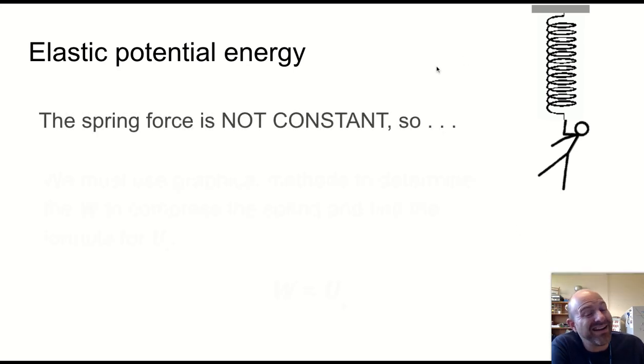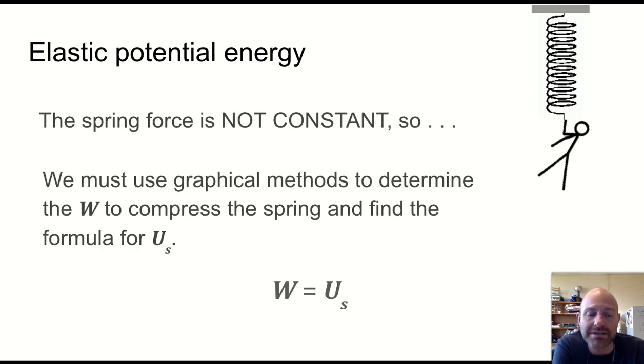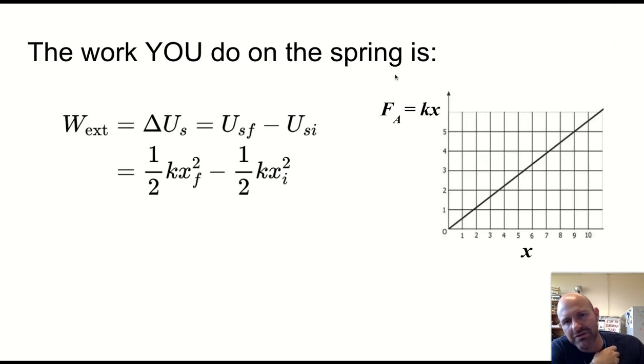So how does this actually work, this elastic potential energy? Well, the spring force is not constant. So we can't just multiply force times distance. We have to use graphical methods. And we've done this before when we talked about finding the area under the curve of a particular position or velocity time graph to find information about displacement.